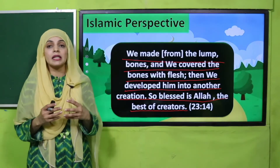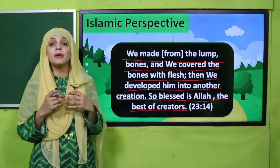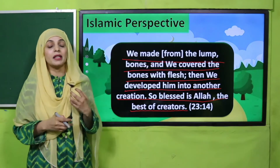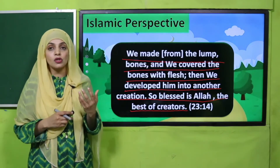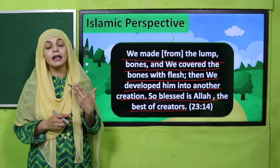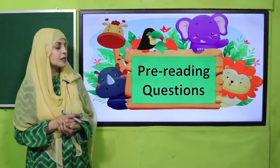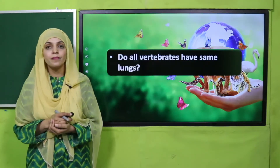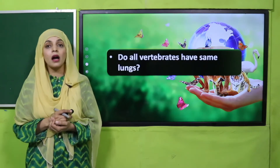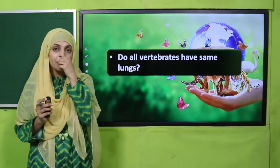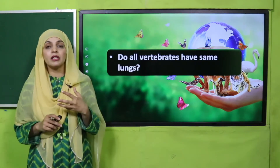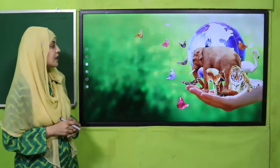Now is the time for the pre-reading question. Listen carefully and then answer: Do all vertebrates have the same lungs? No, the lungs are different in different types of vertebrates. Lungs are present in all vertebrates for breathing, but they are of different types — there is variation among different groups.